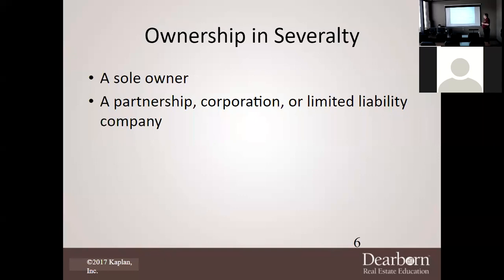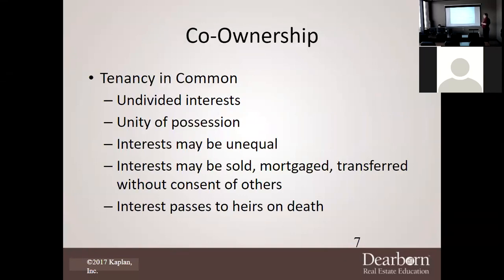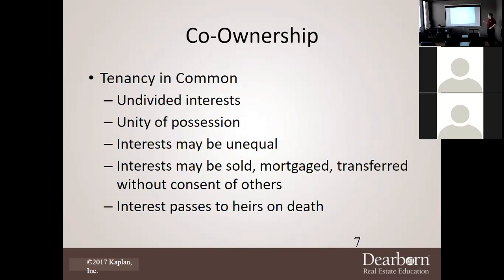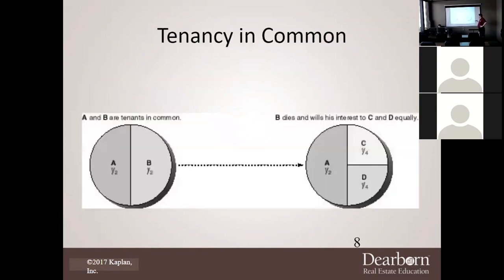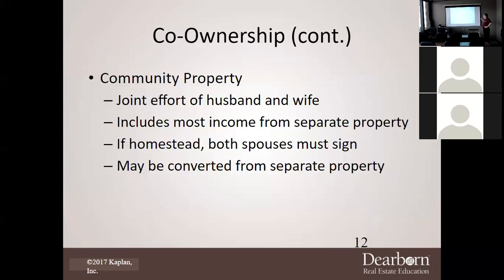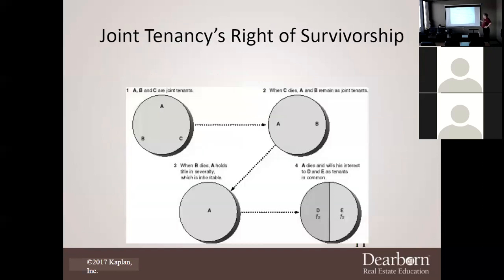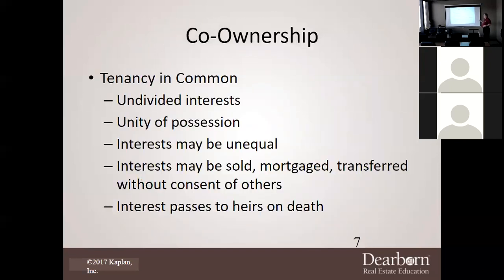Tenancy in common is one type of co-ownership. With co-ownership there are different types: tenancy in common, joint tenancy with right of survivorship, and community property. Don't think that the only type of co-ownership is tenancy in common — there are multiple types.